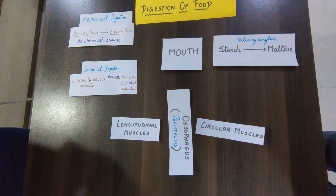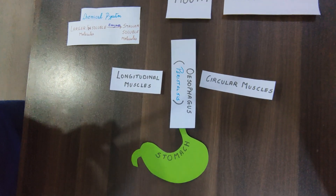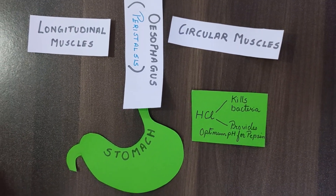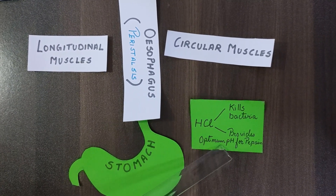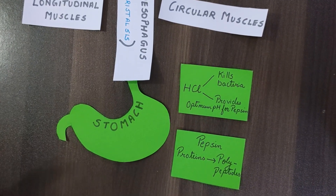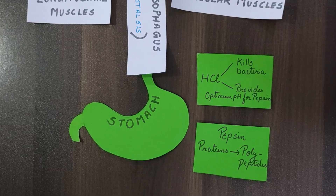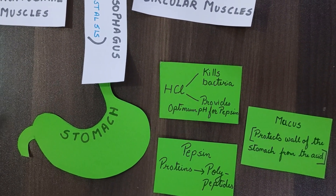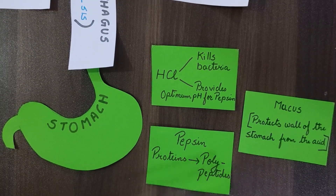Inside the stomach there are various enzymes and gastric juices which act on the food. The first one is hydrochloric acid, also called HCl, which helps to kill the bacteria that comes along with the food and also provides an optimum pH for pepsin. Pepsin is an enzyme secreted by the stomach which converts proteins to polypeptides. The third is mucus, which is secreted by the stomach to protect its walls from the acid.